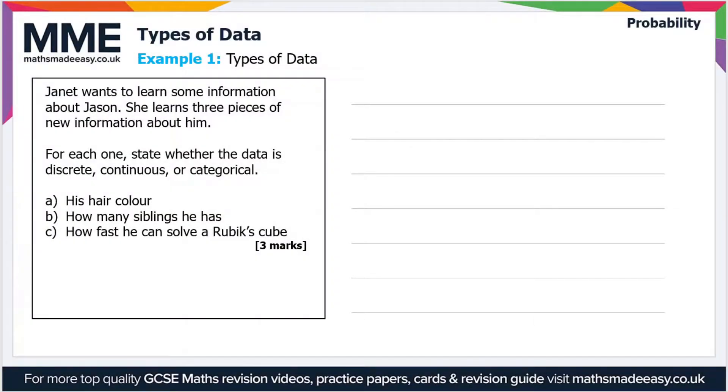Welcome to the Maths Made Easy tutorial on types of data. This is the second video on this topic, and we'll go over some example questions. The first one: Janet wants to learn some information about Jason. She learns three pieces of new information about him. For each one, state whether the data is discrete, continuous, or categorical.